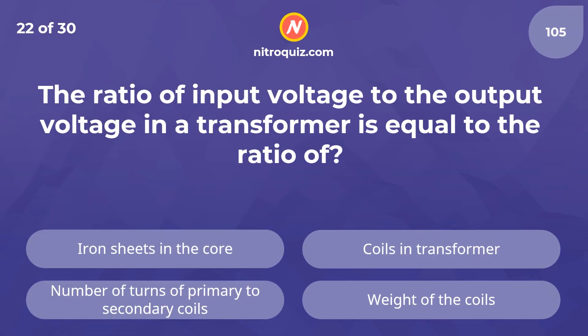The ratio of input voltage to the output voltage in a transformer is equal to the ratio of? Answer is the number of turns of primary to secondary coils.